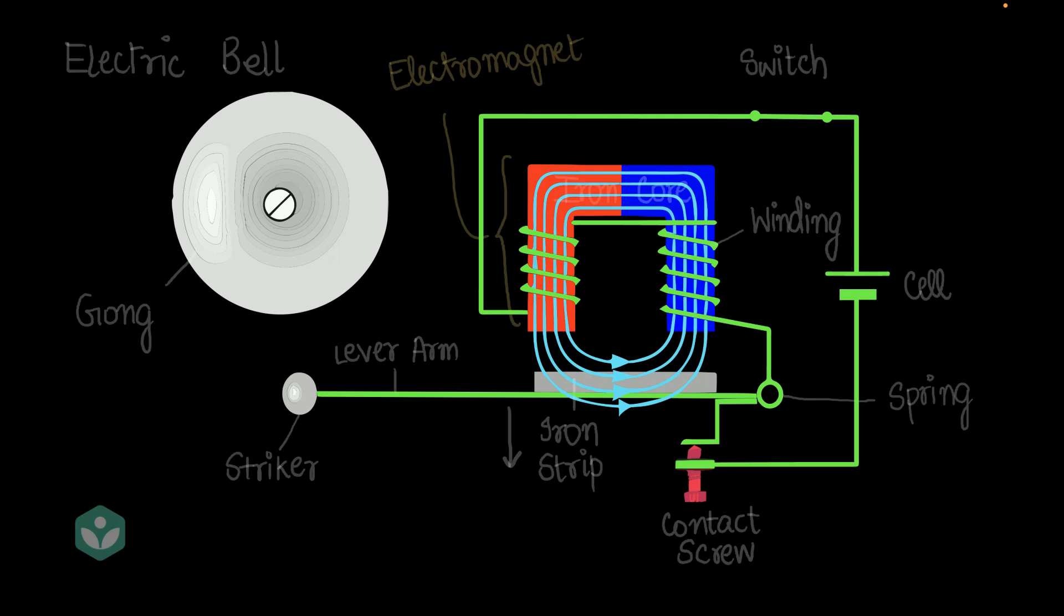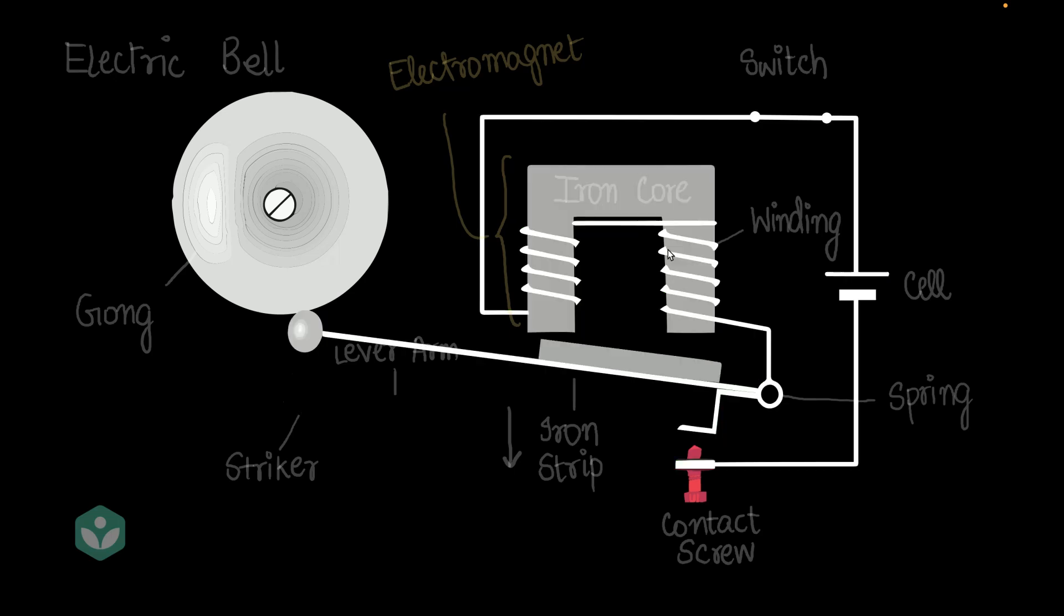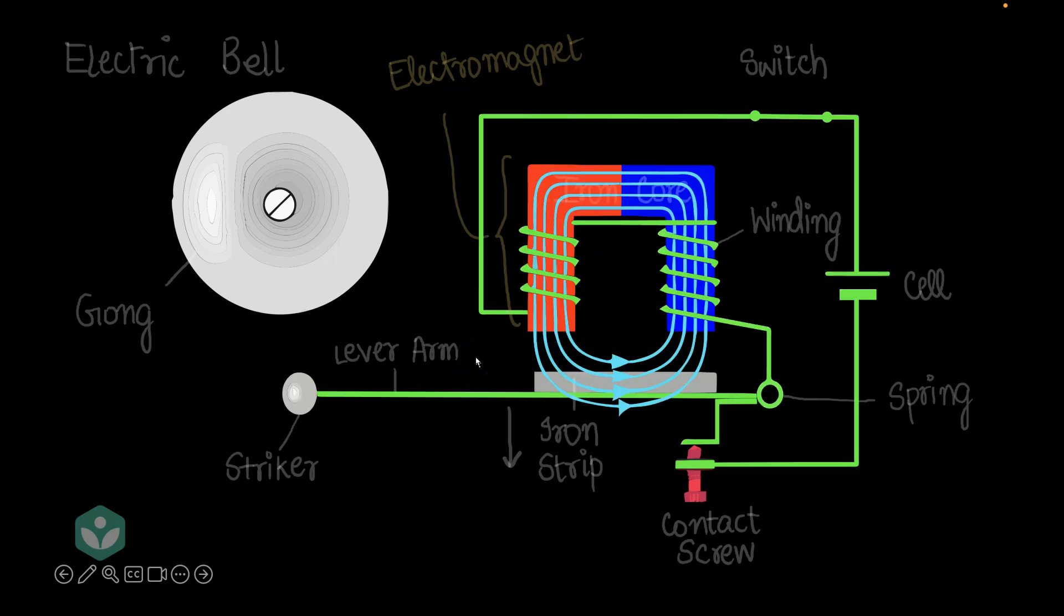Well, if the electromagnet has been turned on, then the iron strip is going to be attracted upwards. And if the iron strip is attracted upwards, the striker is going to go and strike the gong. But, again, we have that problem of the contact being lost here. And, again, since the circuit is broken and this is no longer an electromagnet, this lever arm is going to come back down.